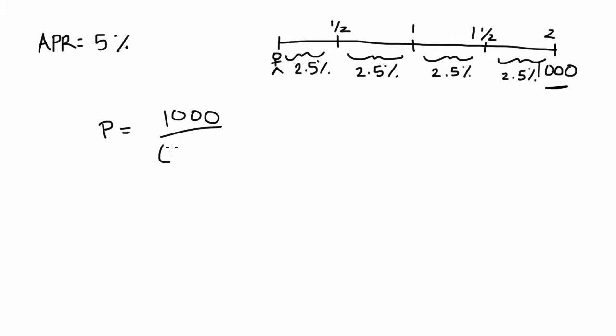So we divide this by one plus 0.025, which is that six month interest rate, and raised to the fourth because there are four six month periods in two years.